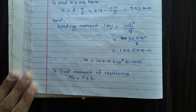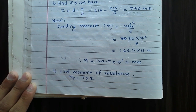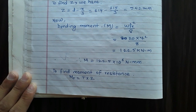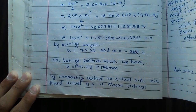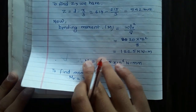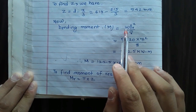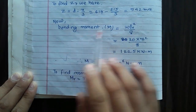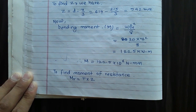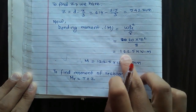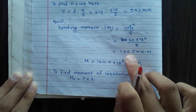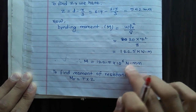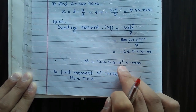Bending moment: M = wL²/8 = 20 × 7²/8 = 122.5 kN·m = 122.5 × 10⁶ N·mm.